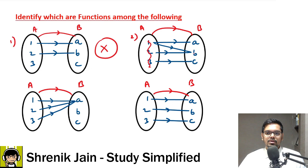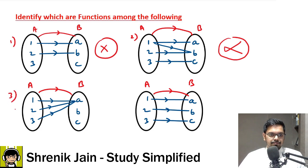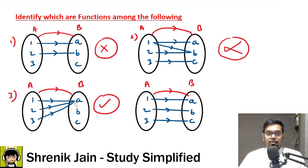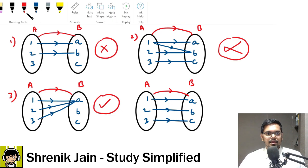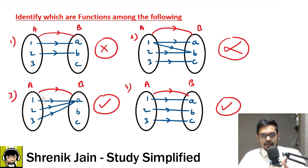Example 2 is also not a function, even though every input seems linked. The problem is that one input gives two outputs, a and b — like clicking Facebook giving both Facebook and WhatsApp. That is not valid, so not a function. Example 3 IS a function: every input leads to exactly one output and every input is linked. Example 4 is also a function for the same reason.